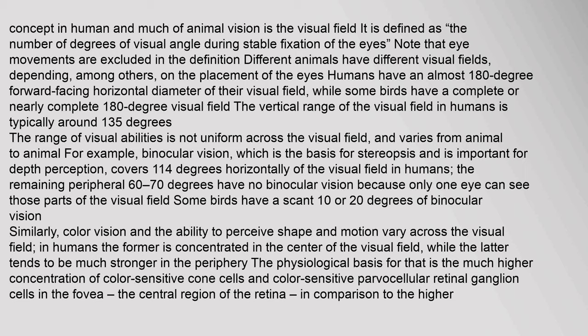The range of visual abilities is not uniform across the visual field and varies from animal to animal. For example, binocular vision, which is the basis for stereopsis and is important for depth perception, covers 114 degrees horizontally of the visual field in humans. The remaining peripheral 60 to 70 degrees have no binocular vision because only one eye can see those parts of the visual field.